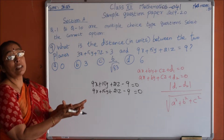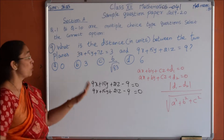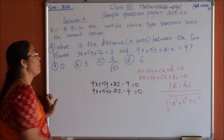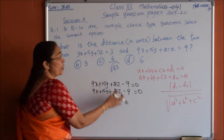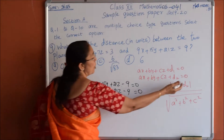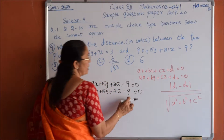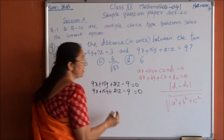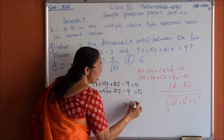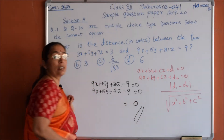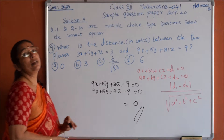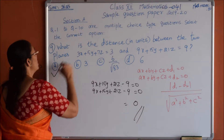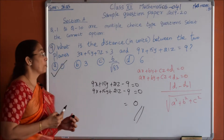These 2 equations represent the same plane — they are coinciding planes, so there is no distance between them. Substituting into the formula: modulus of D1 minus D2 = modulus of (−9) minus (−9) = 0. Therefore the distance is 0, option A.